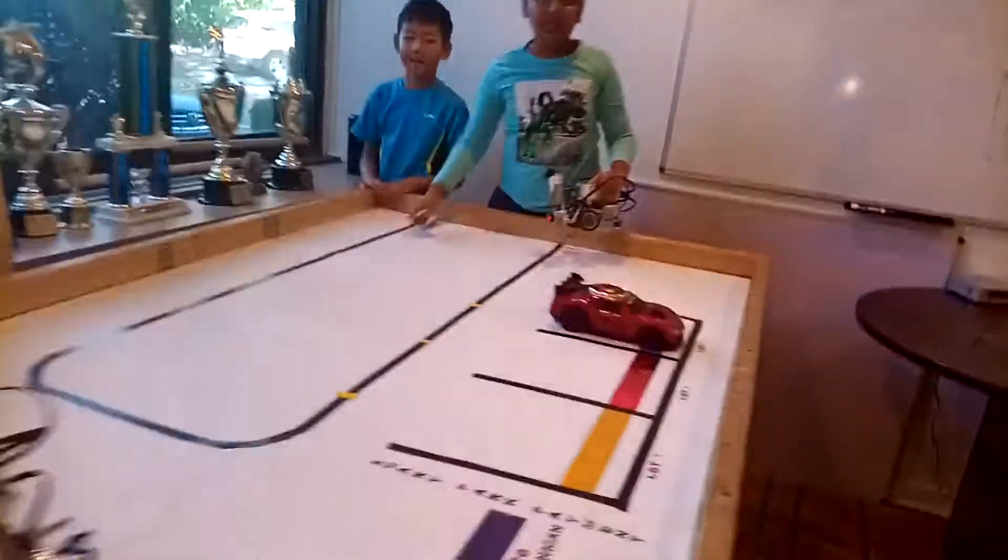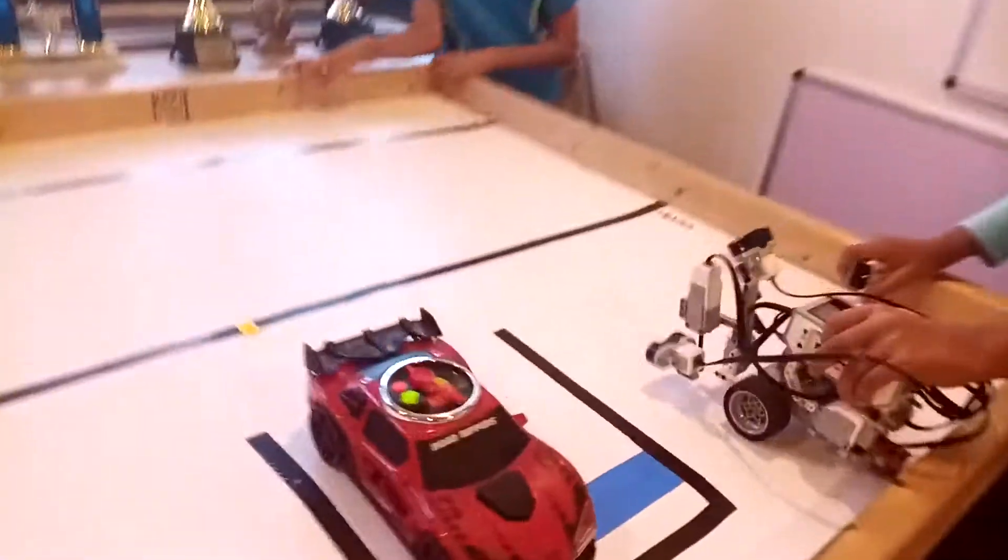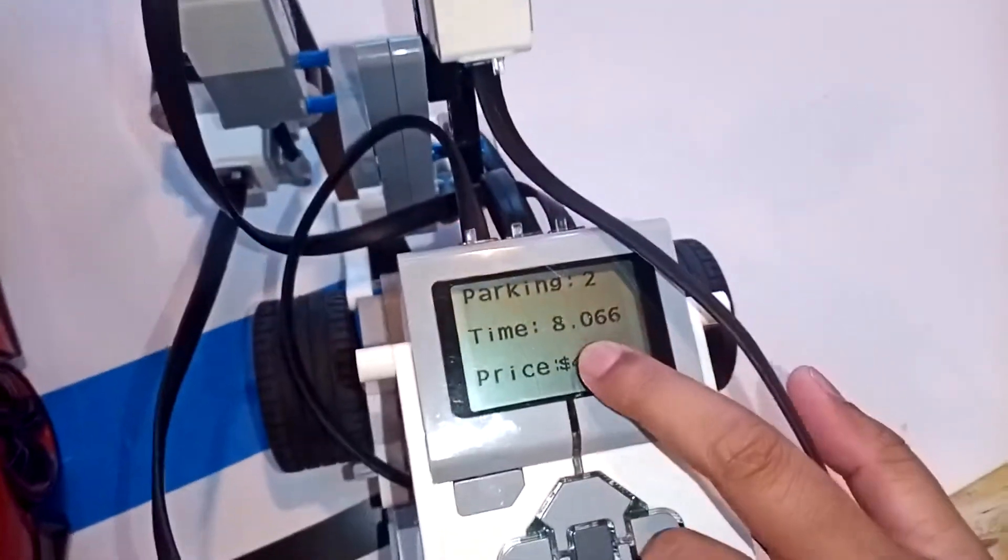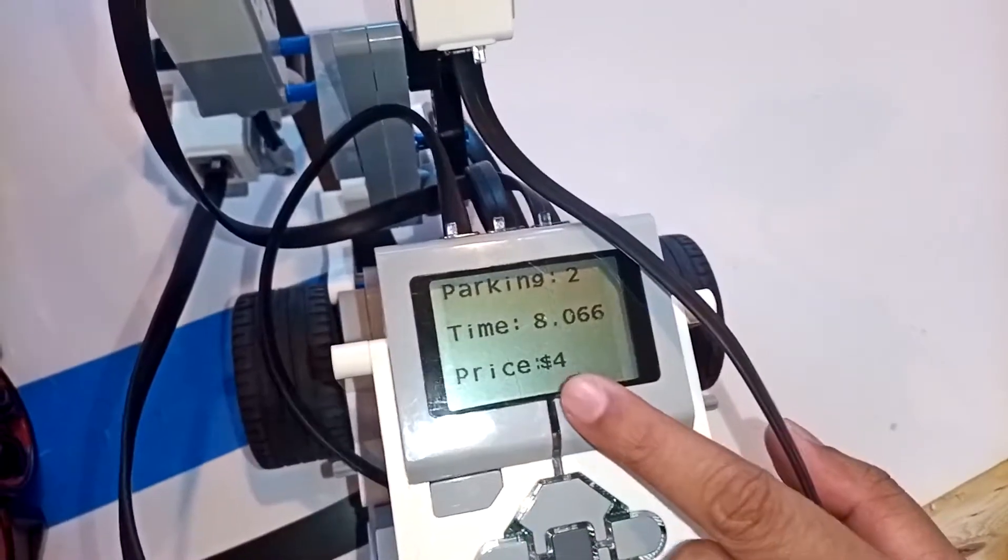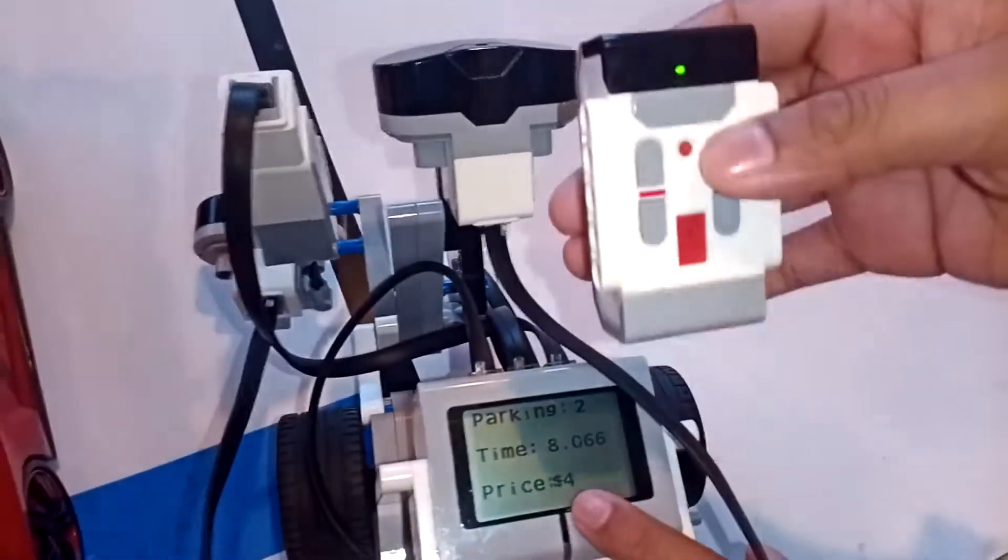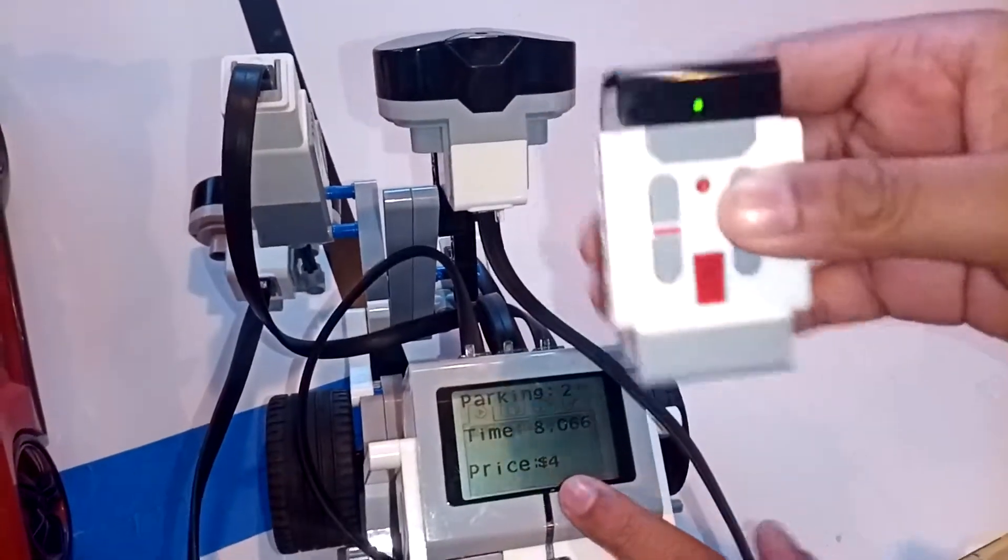As you can see, the car found me and then it displayed the parking lot number, the time in the parking lot, and then the price. When I press this button on the beacon, it ends the program. Thanks.